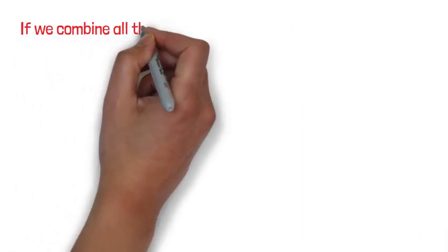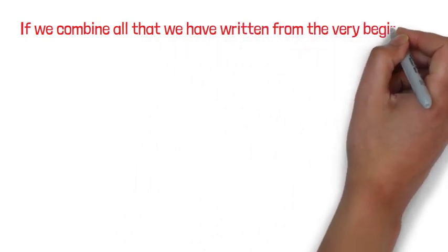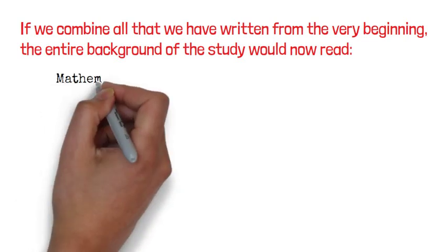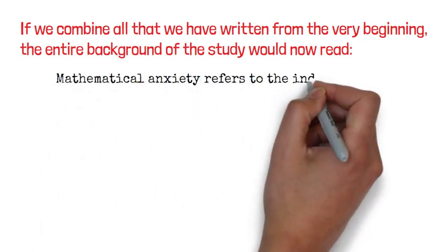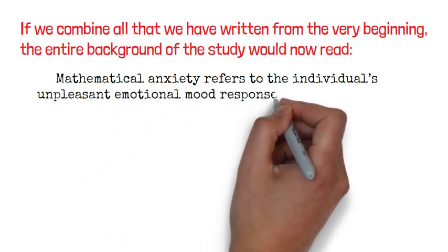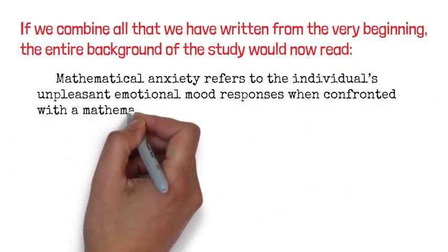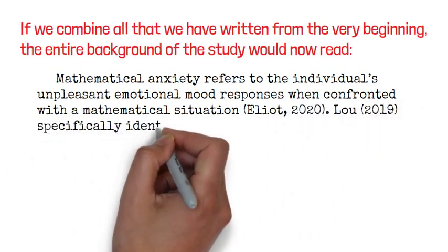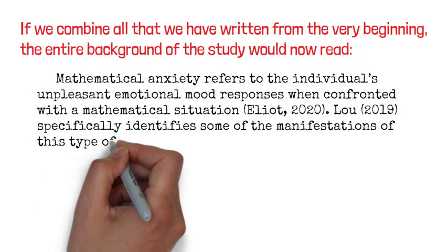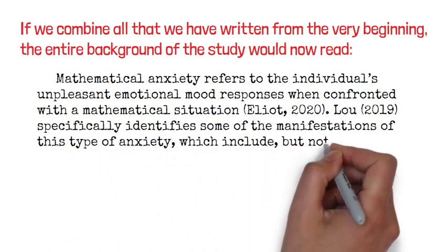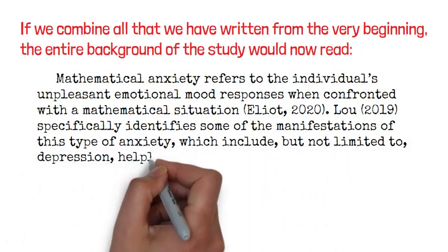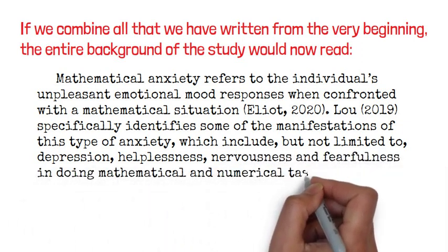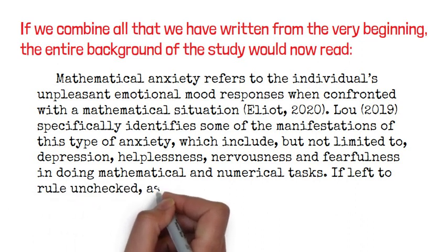Now, if we combine all that we have written from the very beginning, the entire background of the study would now read: Mathematical anxiety refers to the individual's unpleasant emotional mood responses when confronted with a mathematical situation. Liu specifically identifies some of the manifestations of this type of anxiety, which include, but not limited to, depression, helplessness, nervousness, and fearfulness in doing mathematical and numerical tasks.